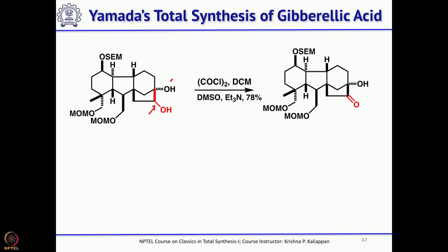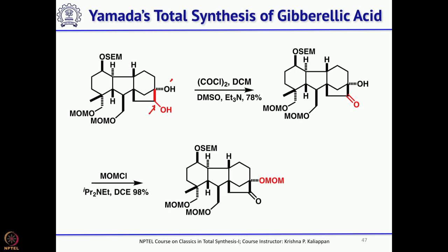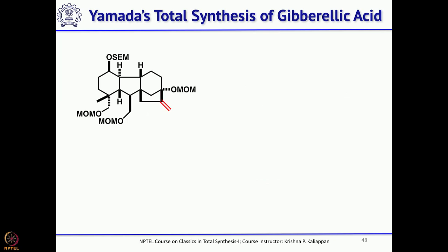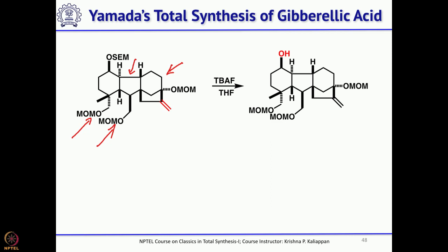Swern oxidation gives the ketone. Then protect the bridgehead hydroxyl as MOM ether, then do the Wittig reaction to get the corresponding exocyclic double bond. Now you can see these two rings are done, and the third ring is also done. What you still need is for these two positions to become carboxylic acids.